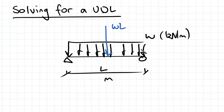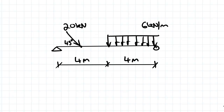Because a UDL is uniformly distributed, it acts at the center. Since this UDL acts over the entire length of the beam, the load WL acts at the center of the simply supported beam. Now for a quick example: we have a simply supported beam with a UDL of 6 kilonewtons per meter acting on the first half.